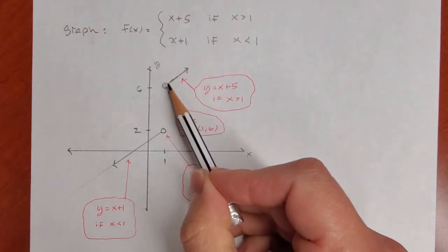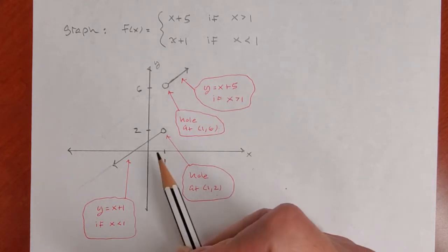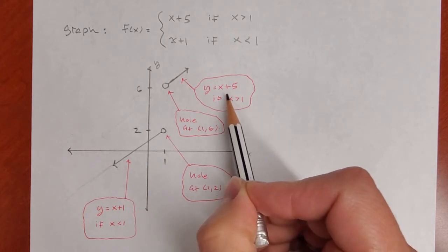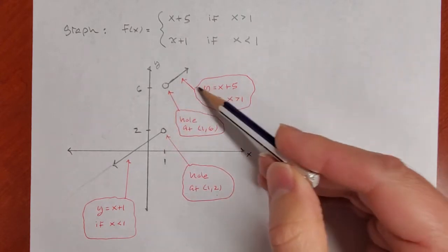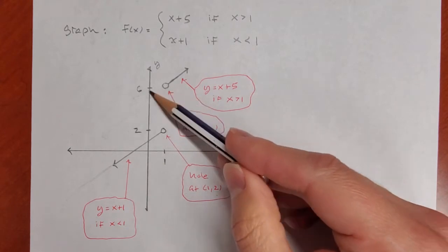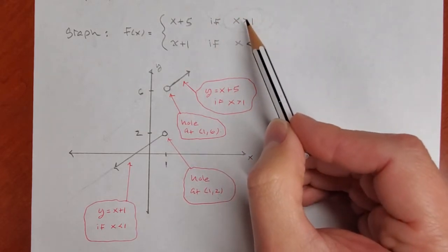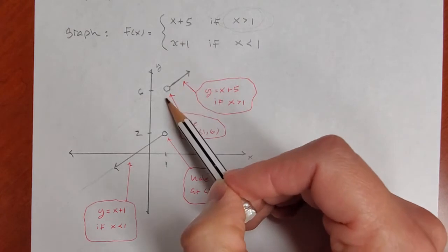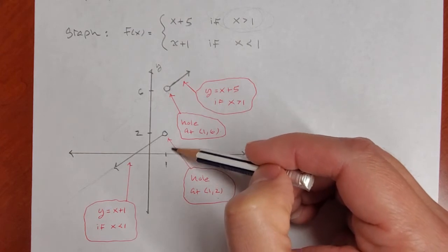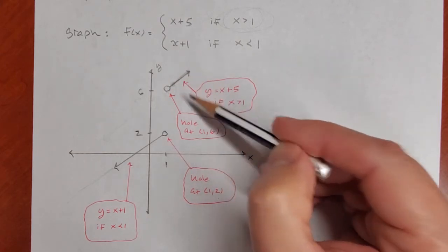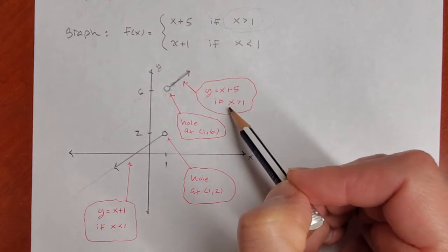For the other part, y equals x plus 5 has a slope of 1 and a y-intercept of 5. I draw it right of x = 1 on the x-axis, and again there's a hole — at (1, 6). Why? Because I can't put 1 in, but if I did I would get 6. So the line goes right up near 6 but we leave that point off.